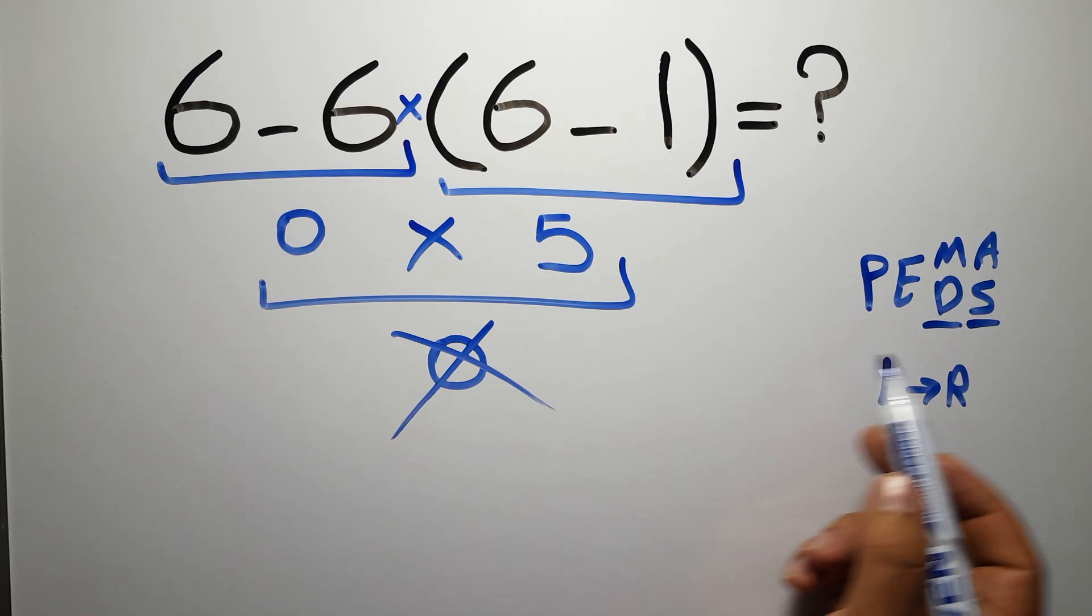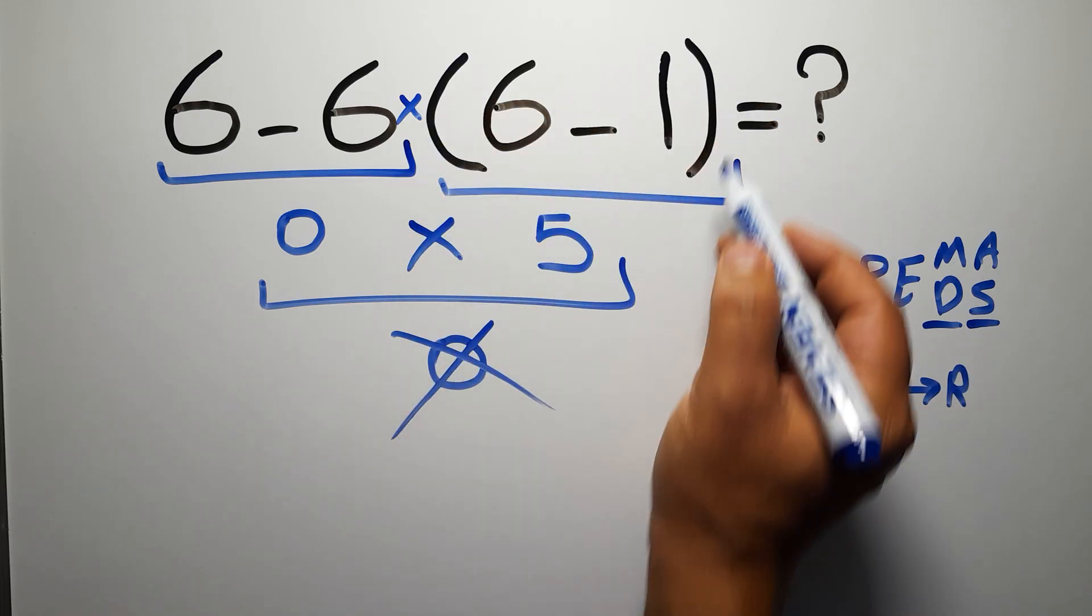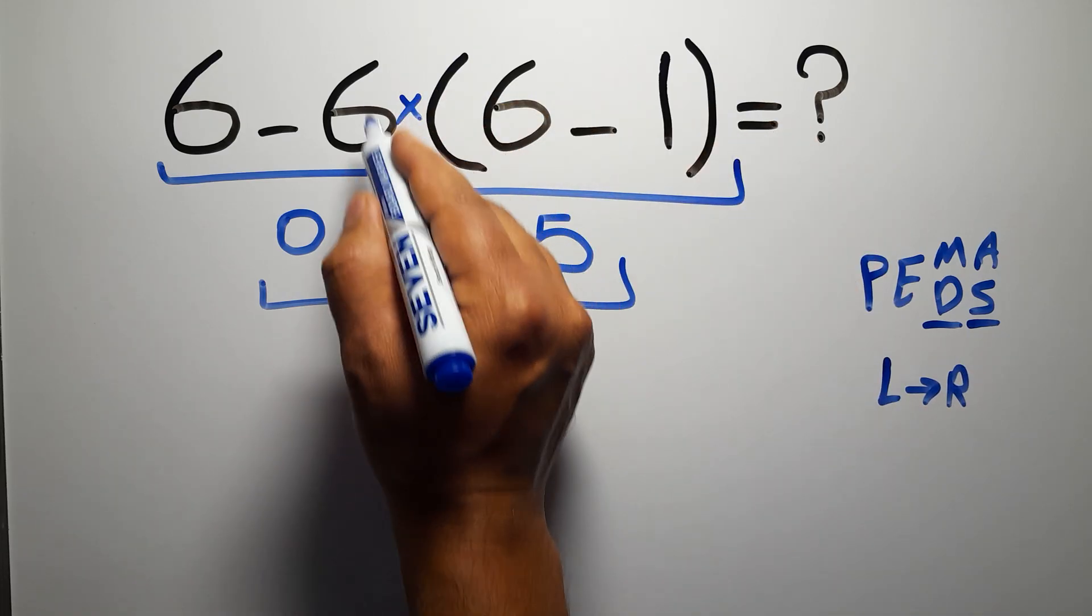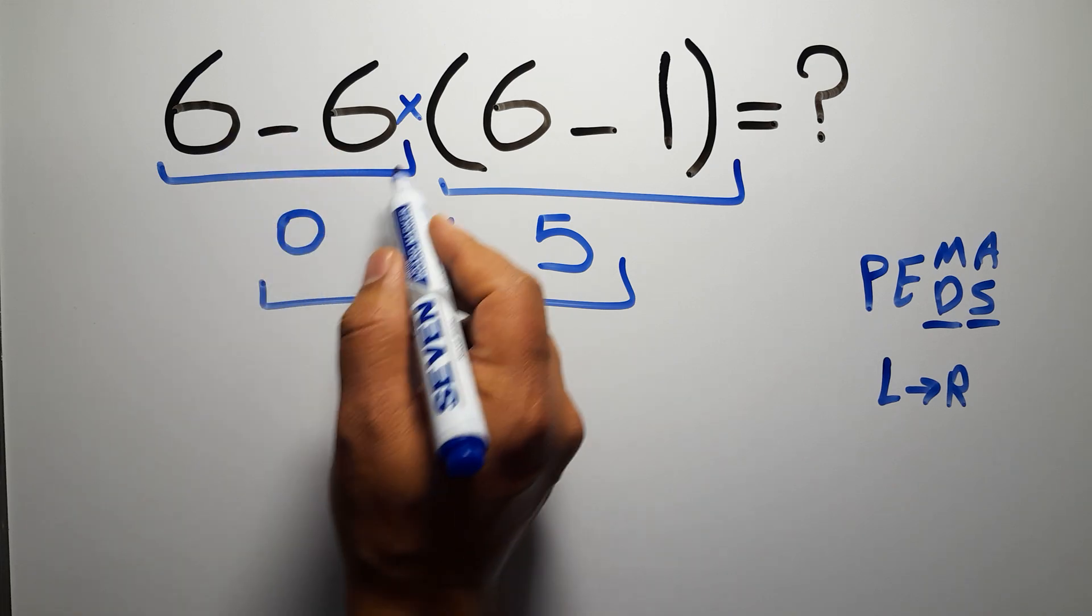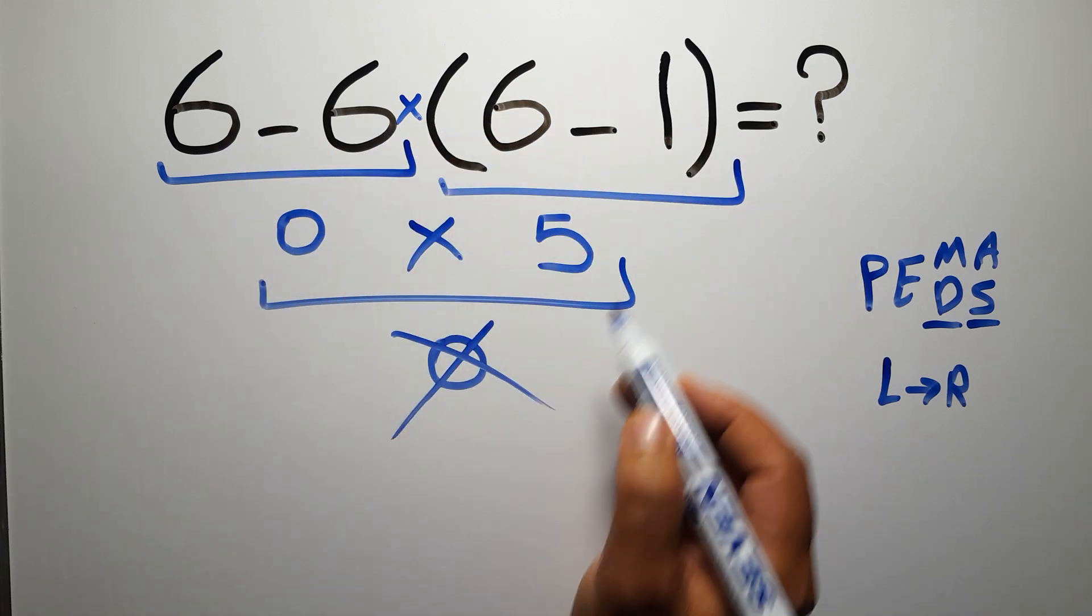Okay, so according to PEMDAS, first we have to do this parentheses, then this multiplication, and finally this subtraction. If we do this subtraction before this multiplication or this parentheses, it is wrong.